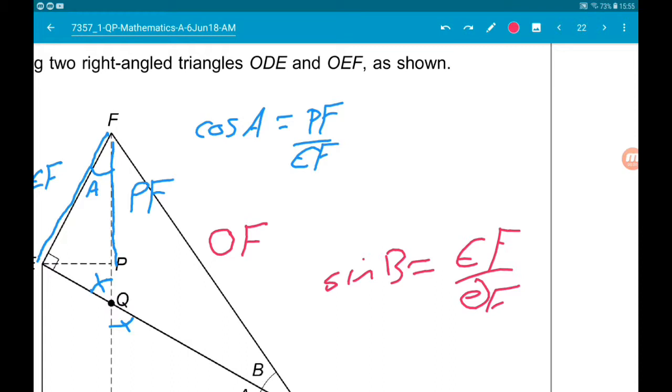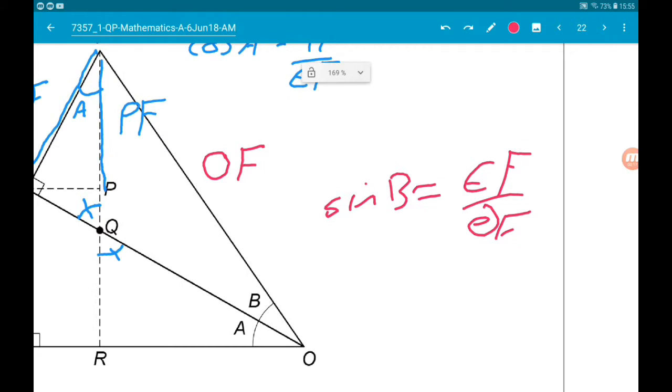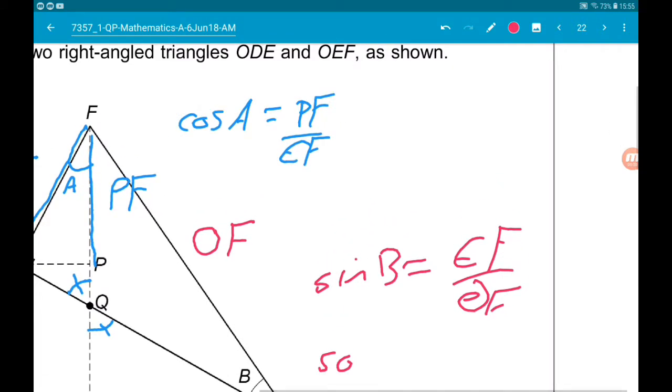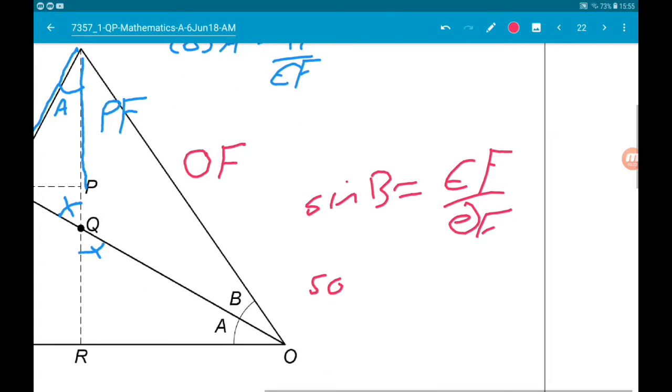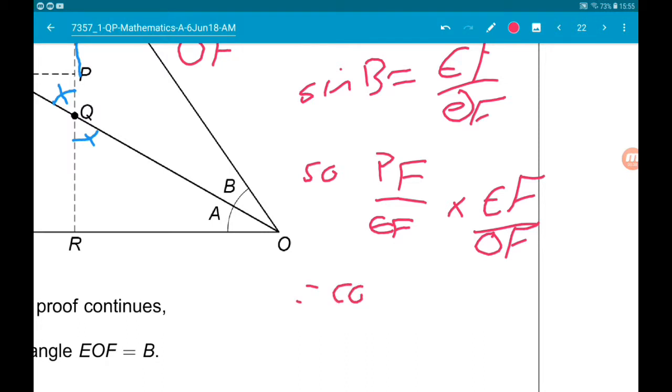Therefore then, we know that PF over EF was cos of A and EF over OF was sin of B. So we can finish by saying, so PF over EF times EF over OF is equal to cos of A times sin of B. Cool.